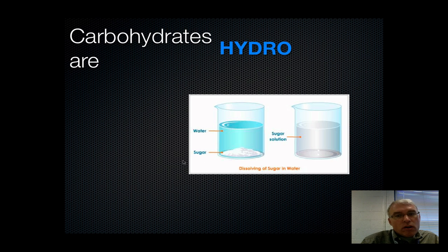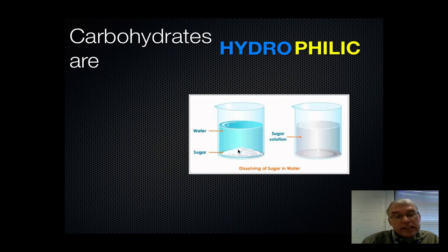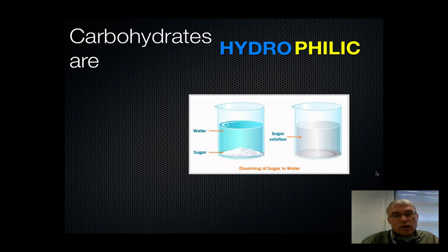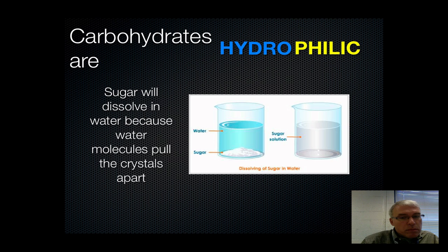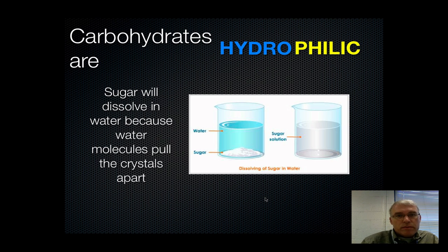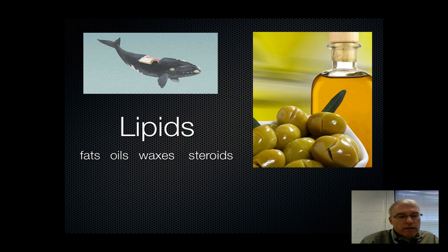Carbohydrates are hydrophilic, which means they're attracted to water. This means most carbohydrates will dissolve or at least get very wet if you mix them with water. In this picture, you see water as a solvent being mixed with sugar as the solute, and you end up with a sugar solution. Sugar is very hydrophilic and will dissolve in water because it forms hydrogen bonds. The water molecules, because of the hydrogen bonding, can get between the sugar crystals and literally pull them apart and make them disappear into the solution. Our next category will be lipids, and we'll save that for our next slideshow.